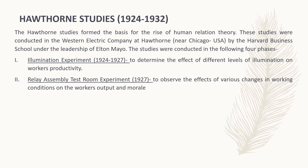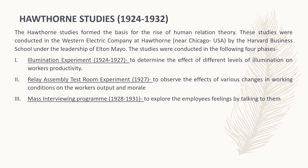The second phase is the relay assembly test room experiment from 1927, which aimed to observe the effect of various changes in working conditions on workers' output and morale. Five girls were organized in a relay assembly test room identical to the first one. This experiment convinced the researchers that neither wage incentives alone nor changes in physical conditions could help increase production. The explanation was that the girls experienced a tremendous increase in work satisfaction because they had greater freedom in their work environment.